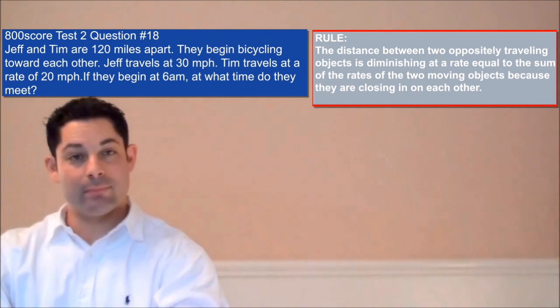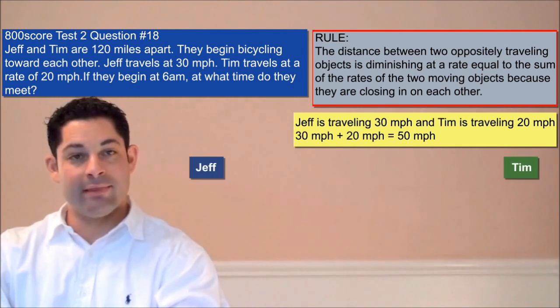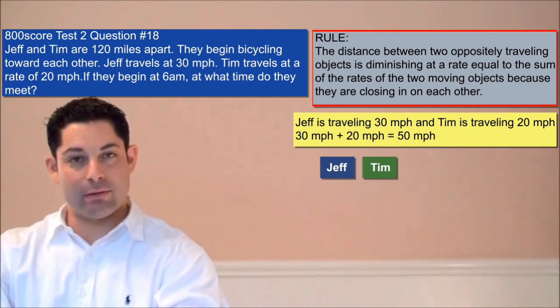So let's return to our problem. Since Jeff is traveling at 30 miles per hour and Tim is traveling at 20 miles per hour, the distance between them is closing at a rate of 50 miles an hour. So our rate of distance change is 50 miles an hour.